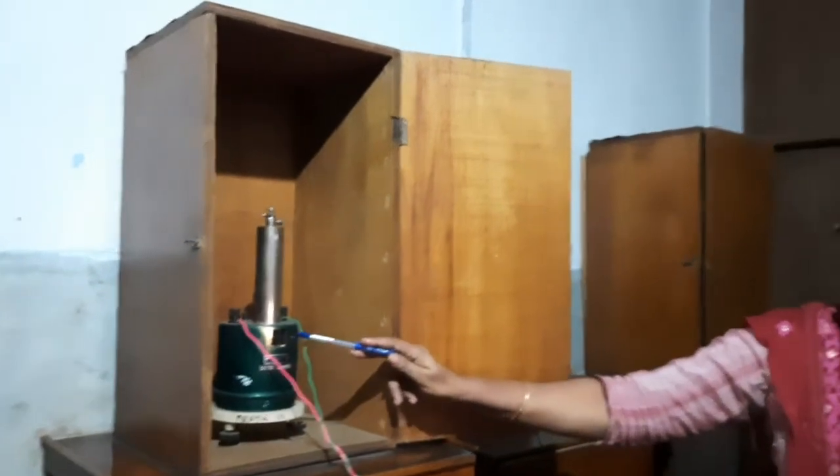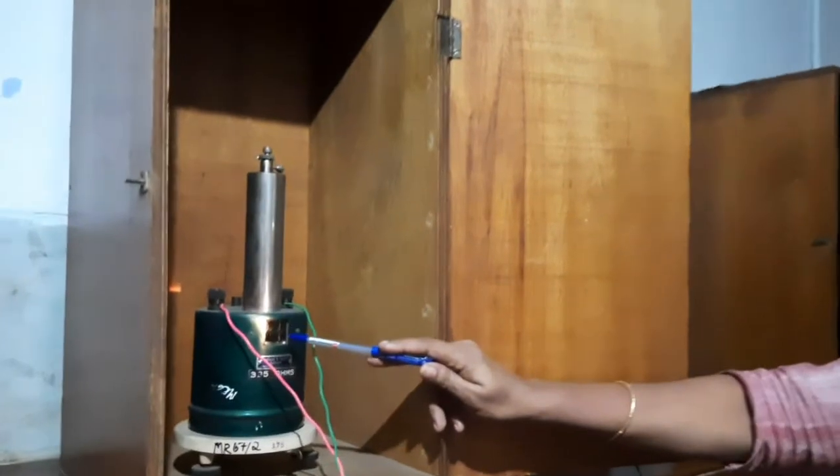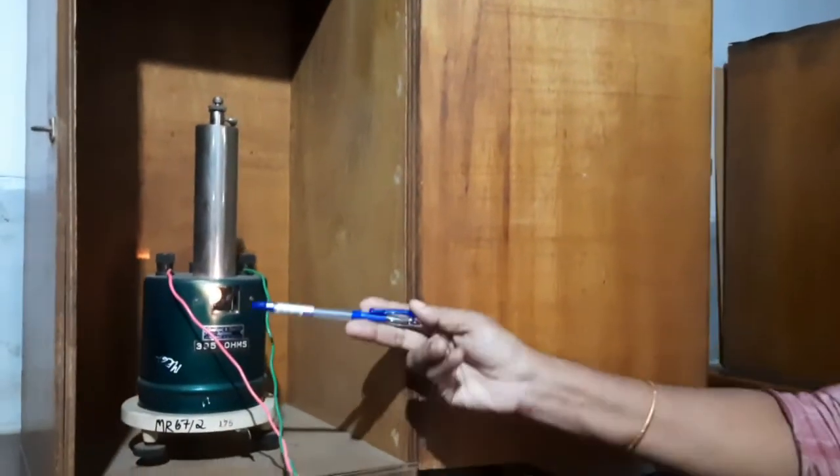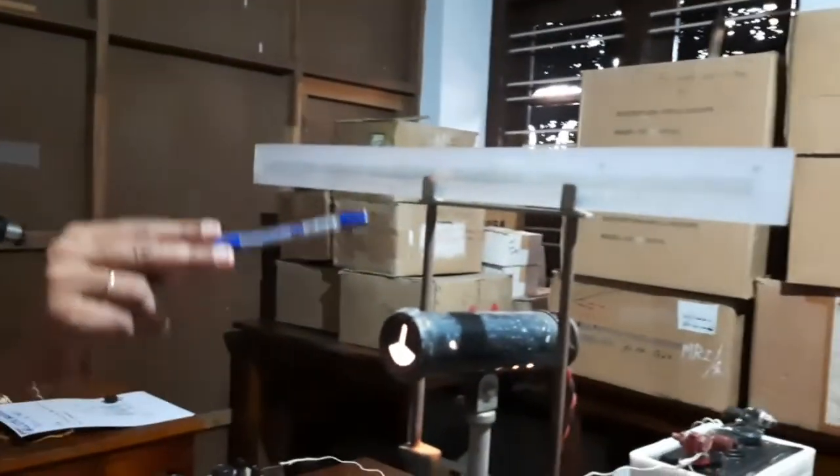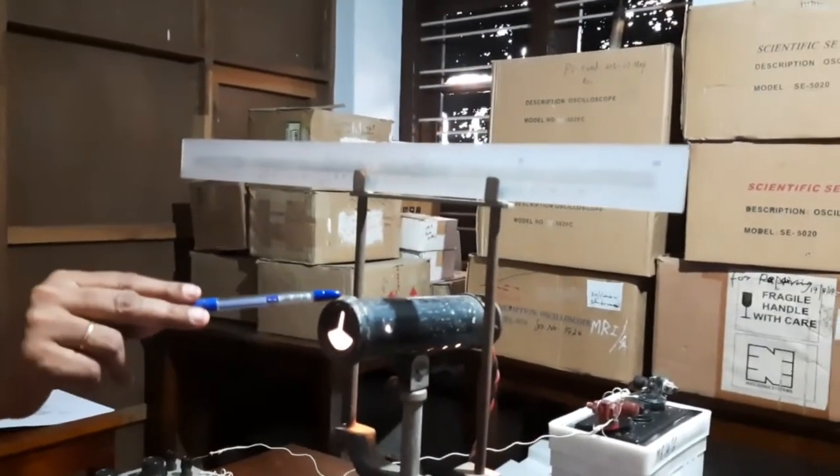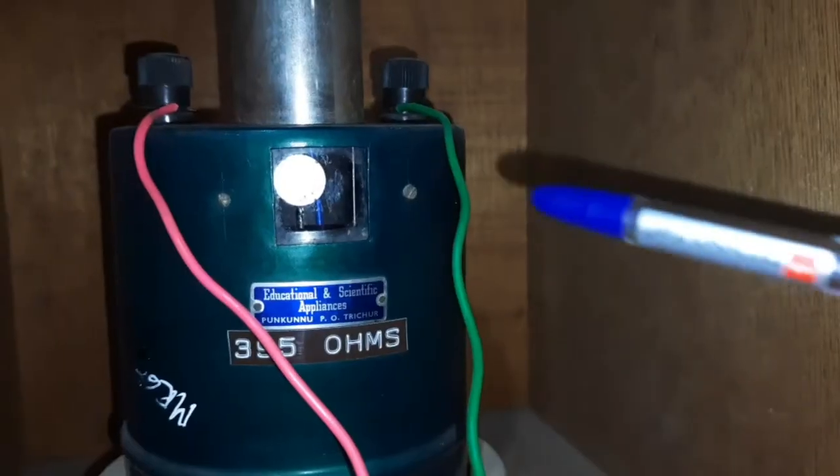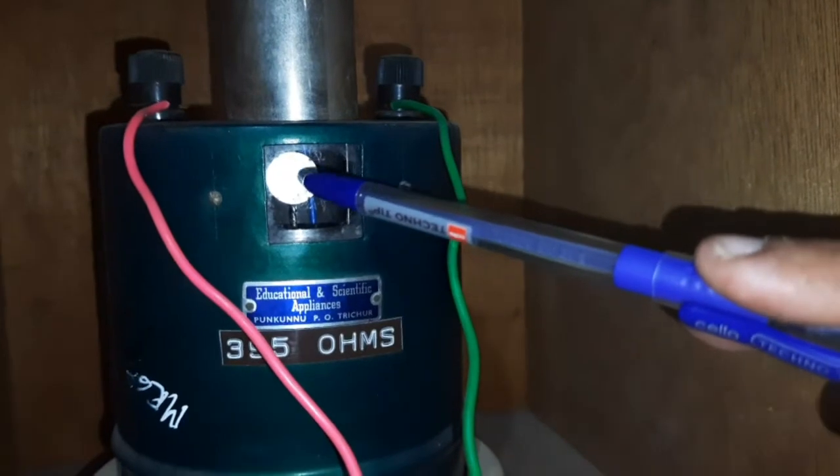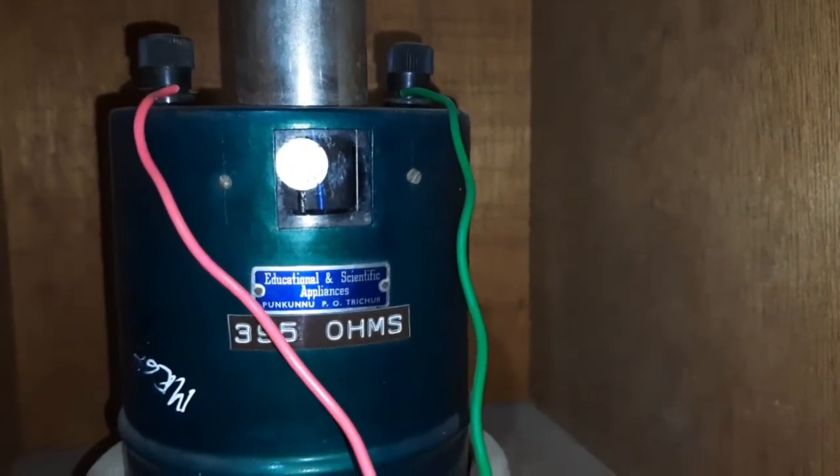Now there is a mirror and a light is focused onto this mirror from the lamp and scale arrangement which is placed over here. This is the lamp and this is the scale. The lamp focuses the light onto this mirror seen inside this BG.